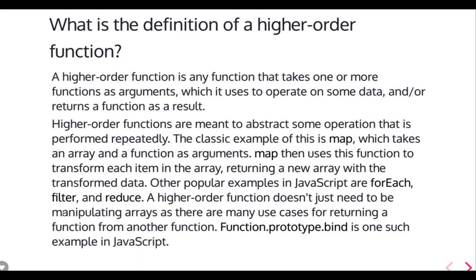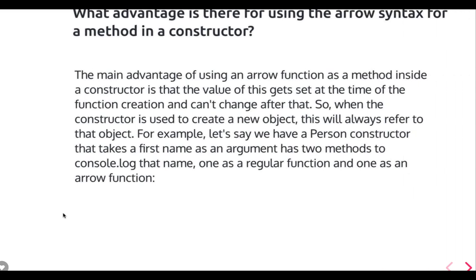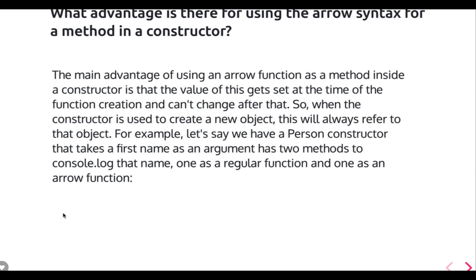Higher-order functions are meant to abstract some operation that is performed repeatedly. The classic example is map, which takes an array and a function as arguments, then uses that function to transform each item in the array, returning a new array with the transformed data. Similarly, array filter and reduce do the same thing — they accept a callback as an argument. If a function takes another function as an argument, it's a higher-order function.